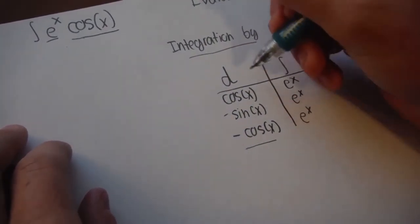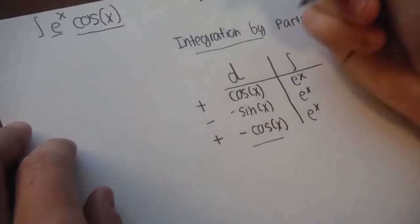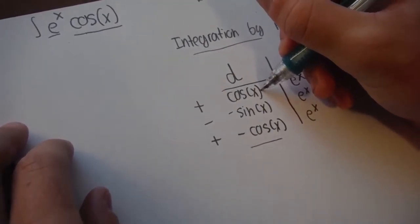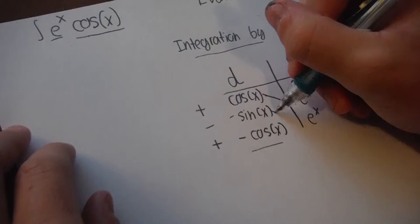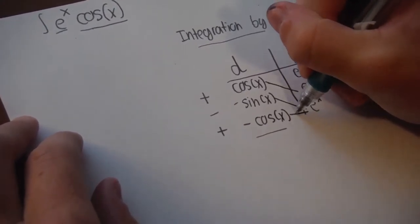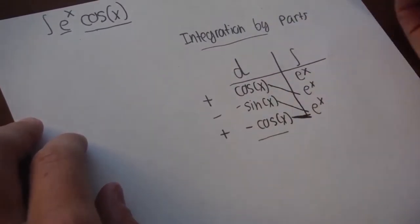So, what you do is positive, negative, positive as part of the strategy, and you want to multiply these two together, and these two, and then these two will be the integral, just like that equation.